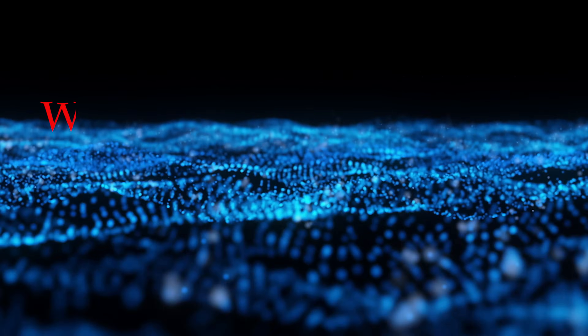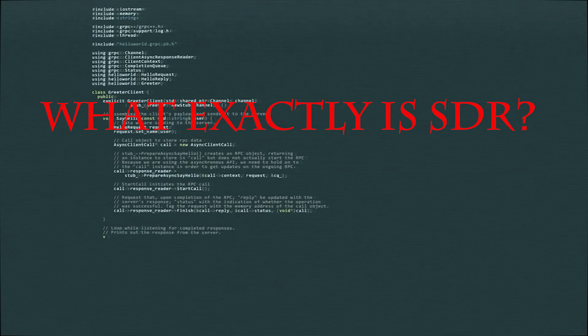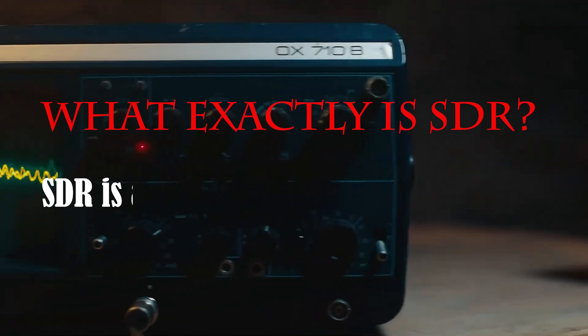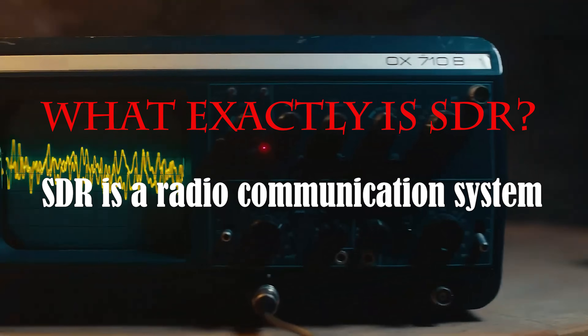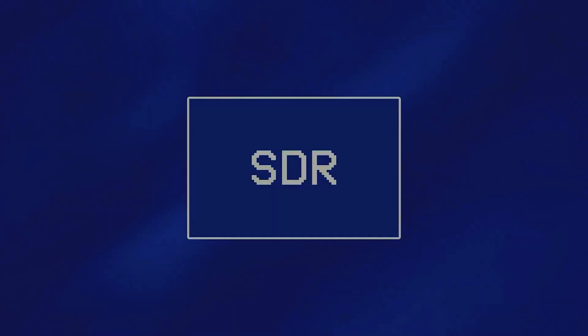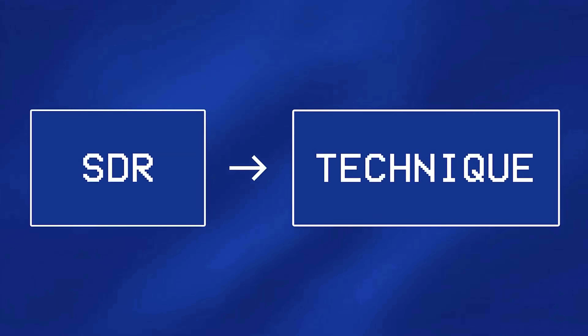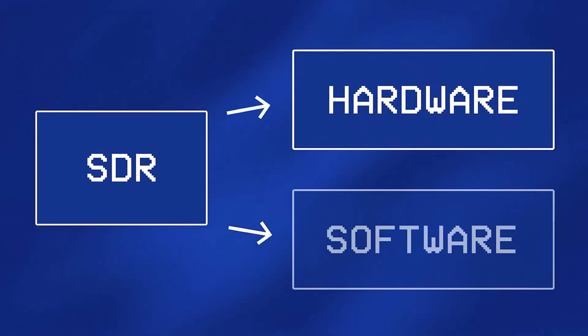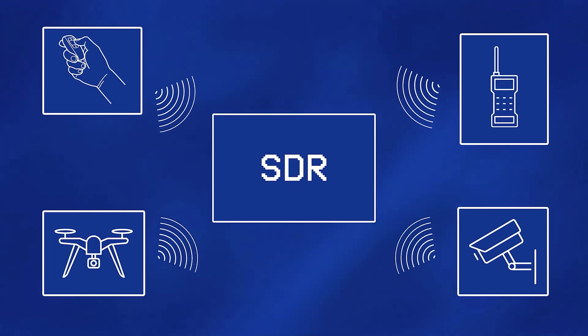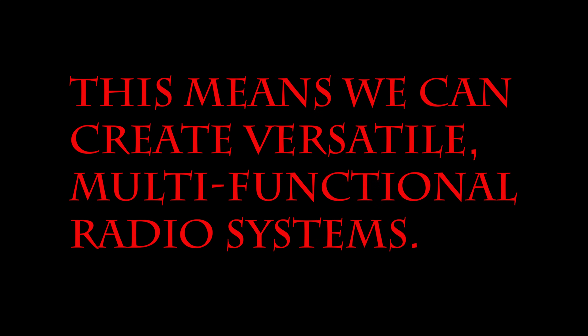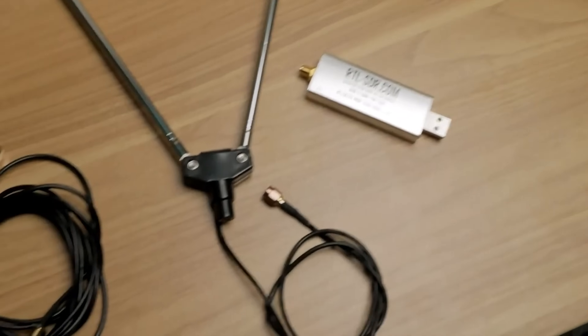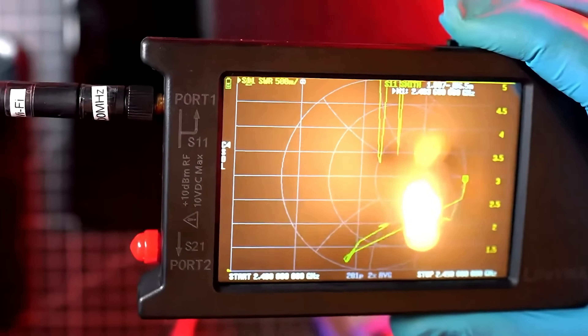So what exactly is SDR? In simple terms, SDR is a radio communication system where components that have traditionally been implemented in hardware are now implemented through software on a personal computer or embedded system. This means we can create versatile, multifunctional radio systems.